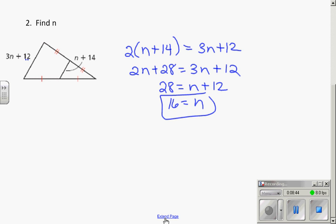If, in this case, N plus 14 is my mid-segment length, and 3N plus 12 is my third side length, I set up the equation that twice the mid-segment is equal to the big segment. Distributive property, 2N plus 28 equals 3N plus 12. Subtract 2N from both sides. Subtract 12 from both sides. N is 16.